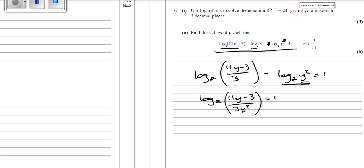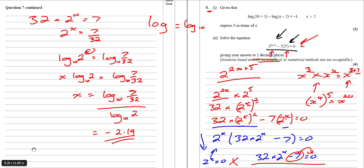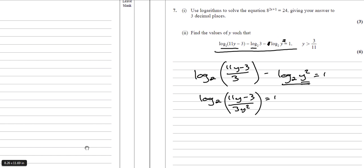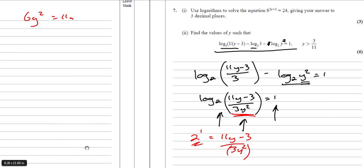Going back to the 2016 question — when we had log base 3 of (3b + 1)/(a − 2) = −1, we said that the base to the power of the answer equals the subject. Exactly the same here: 2 to the power of 1 equals (11y − 3)/(3y²). Now 2 to the power of 1 is simply 2. Bringing the denominator up: 6y² = 11y − 3.